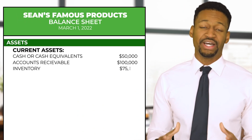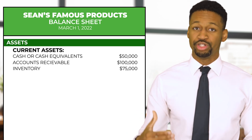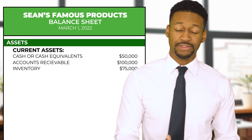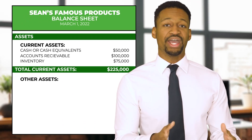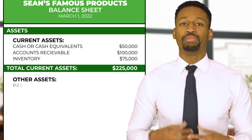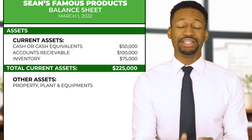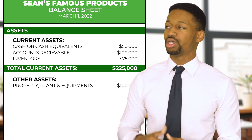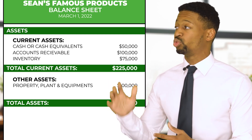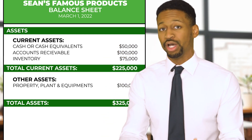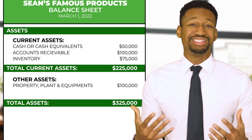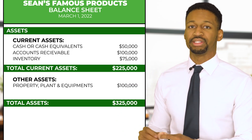We also have inventory worth $75,000, which we expect to sell within the next 12 months. So the total current assets come to $225,000. Next, you have long-term assets — in this case, property, plant, and equipment for $100,000. Long-term assets are investments toward the future growth of your company and cannot be converted into cash within 12 months, such as a critical piece of equipment or a property for operations.